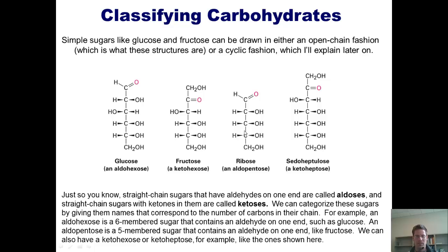We also have ketohexoses and ketoheptoses. Fructose here is a ketohexose, because it's got a ketone in it and it's got six carbons in its chain. And sedoheptulose is a ketoheptose — it's got seven carbons in its chain and it has a ketone inside it.